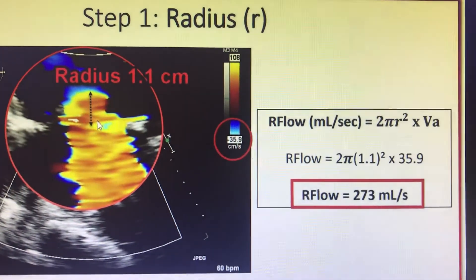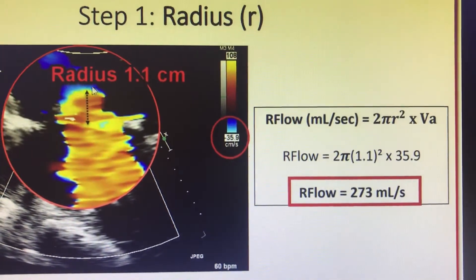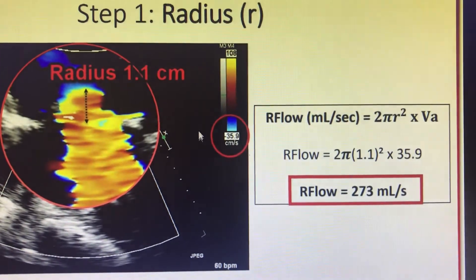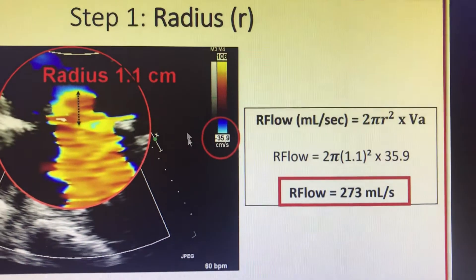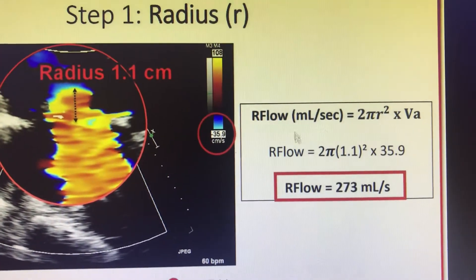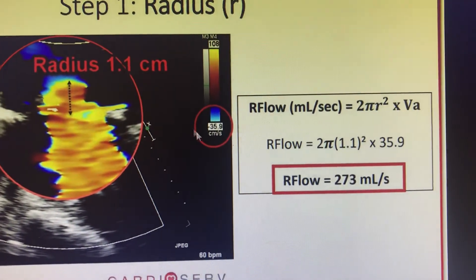You measure the radius when the hemispheric jet is created at which aliasing velocity you decide it, that is 35.9. This will give you the regurgitation flow. As we discussed, regurgitation flow in ml per second is equal to 2πr² times aliasing velocity.